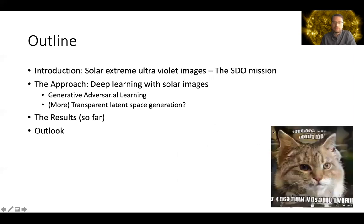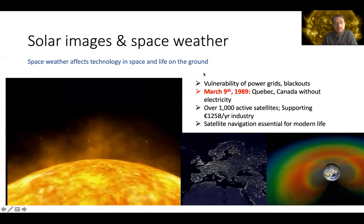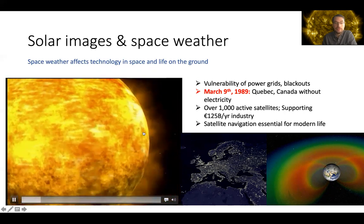I hope you don't get as confused as this cat meme from generated images with GANs, but I will try to keep it simple and give you an overview. The idea is that space weather is triggered by solar activity.